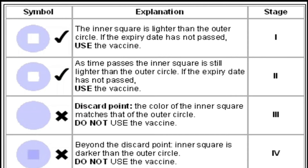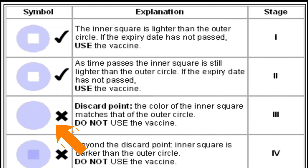Next, the color of the inner square matches that of the outer circle. When the inner square matches the outer circle in color, it is the discard point and the vaccine should not be used — that is stage 3. At the discard point, the color of the inner square matches with the color of the outer circle, so the vaccine should not be used.